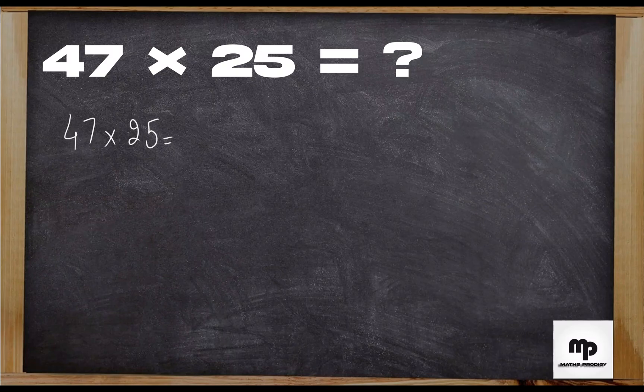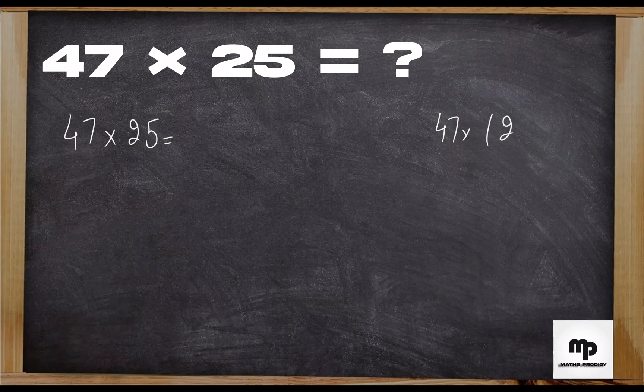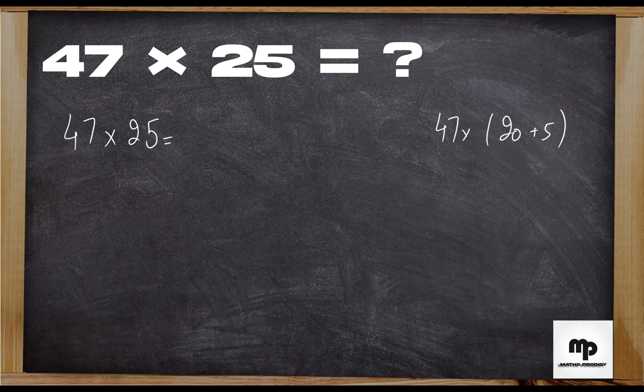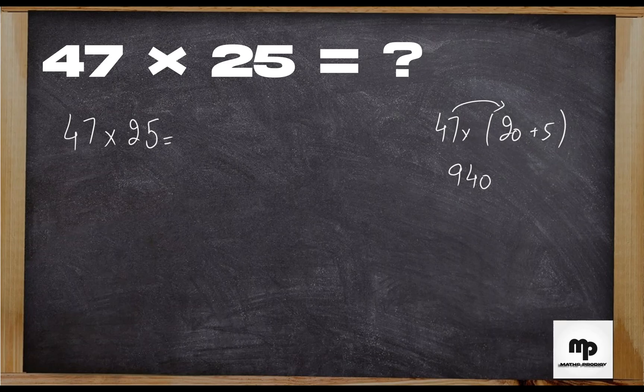Breaking the 25 into 20 and 5, first I'll multiply 47 by 20 which is 940, then I'll do 47 by 5 which is 235.